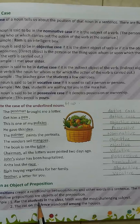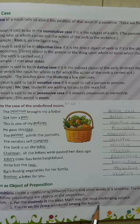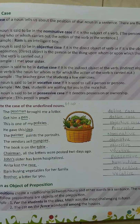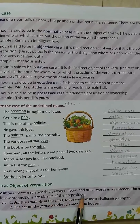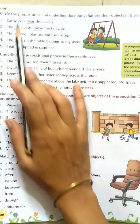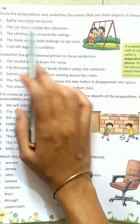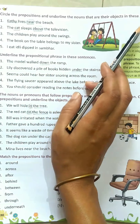Students, here 'students' is the subject and 'the house' is the object. So prepositions create a relationship between nouns and other words in a sentence. Let's see the question: circle the preposition and underline the noun that is its object in these sentences.